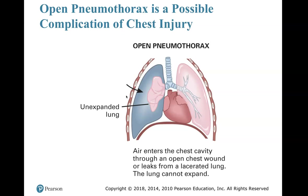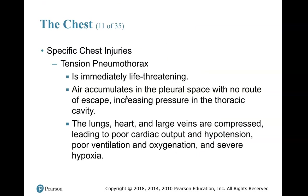Tension pneumothorax — it's three separate words: tension, pneumo, thorax — is immediately life-threatening. Air accumulates in the pleural space with no route of escape, increasing pressure in the thoracic cavity. Before it becomes a tension pneumothorax, it has to be a pneumothorax first. The lungs, heart, and large veins are compressed, leading to poor cardiac output, hypotension, poor ventilation and oxygenation, and severe hypoxia.